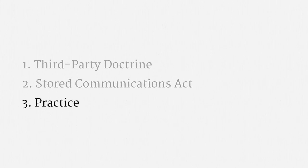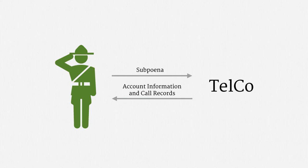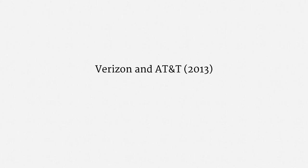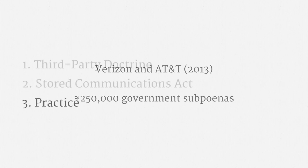Law enforcement serves a telephone company with a subpoena, and the telephone company sends back account information and call records. As a rough benchmark, Verizon and AT&T in 2013 received about a quarter million government subpoenas. The provider subpoena is unambiguously the most popular surveillance technique, and that shouldn't come as too much of a surprise — the subpoena is the easiest form of surveillance procedure.